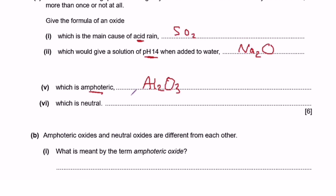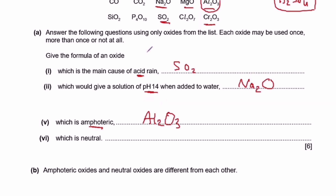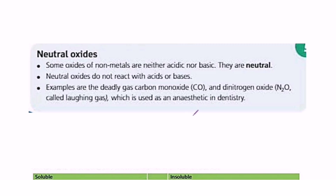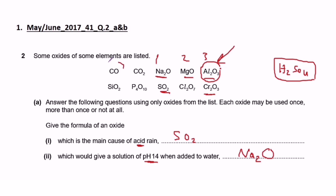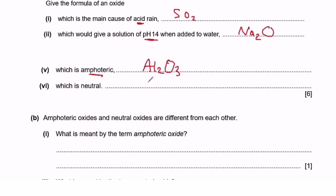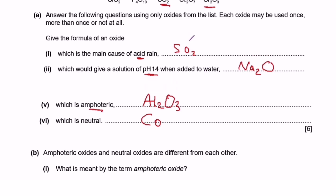Part vi asks for a neutral oxide. A neutral oxide does not react with acids or bases. The two examples to memorize are carbon monoxide (CO) and dinitrogen oxide (N₂O). From the list, carbon monoxide is the neutral oxide, so the answer is CO.